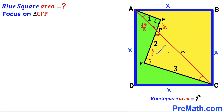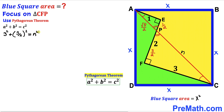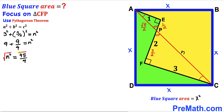Now label segment PC as lowercase n. Applying the Pythagorean theorem to right triangle CFP, where the hypotenuse is n and the two legs are FC = 3 and PF = 3/2: 3 squared plus (3/2) squared equals n squared. Taking the square root, n equals 3√5 divided by 2.